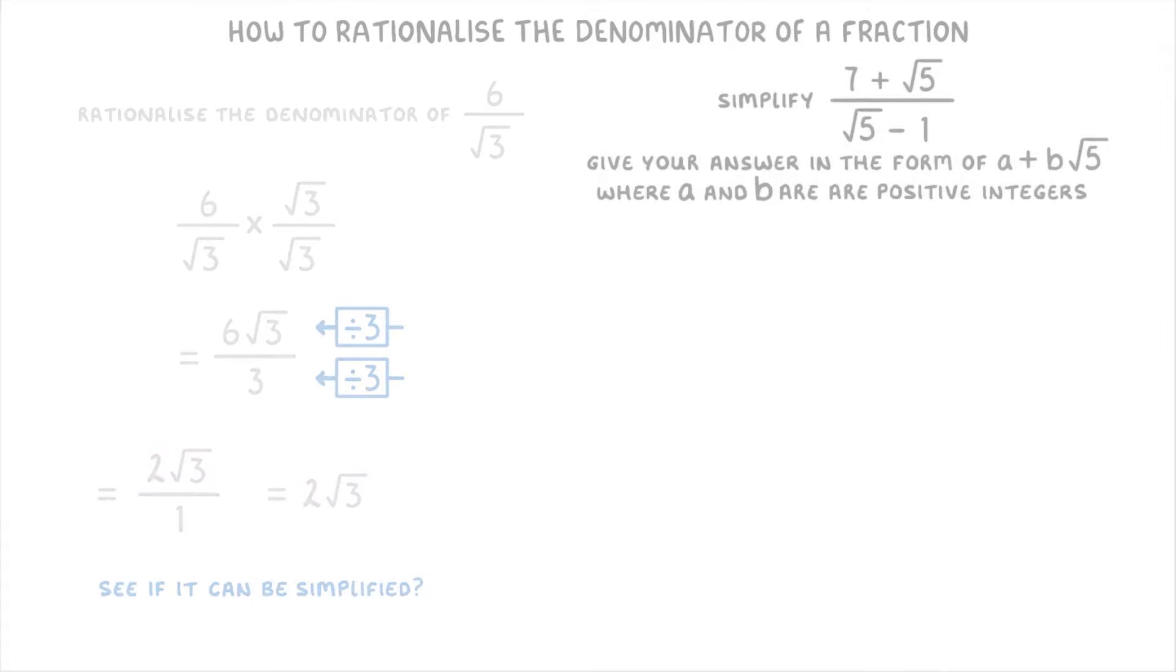For this next one, we've got to simplify 7 plus root 5 over root 5 minus 1, and they're asking us to give our answer in this particular form of a plus b root 5, where a and b are positive integers.